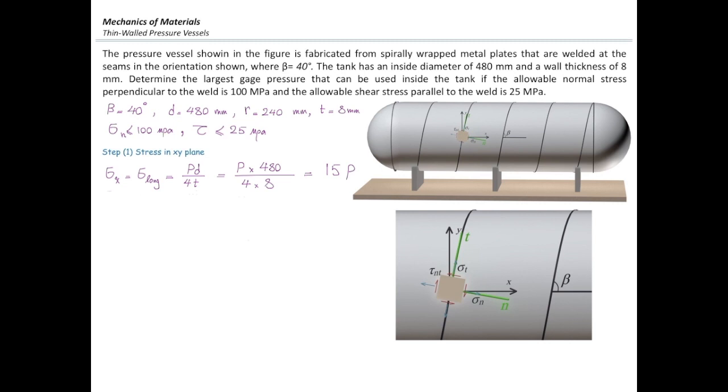Sigma y is hoop stress, and that can be determined from PD over 2t equation. But I don't need to determine that. Why? Because we know that stress in the hoop direction is always twice of stress in the longitudinal direction. So that would be 30P.